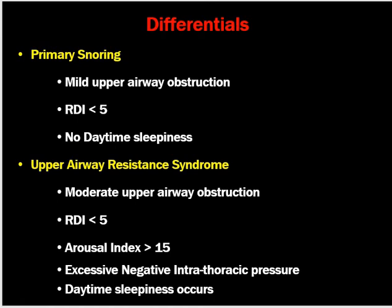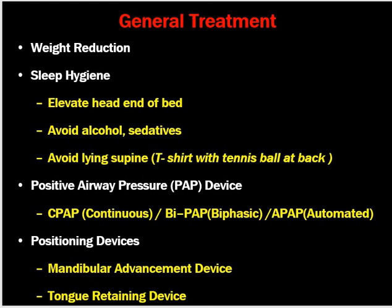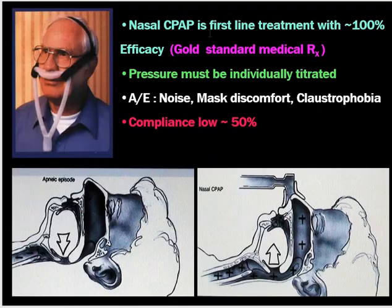General treatment aims for weight reduction, maintaining sleep hygiene by elevating the head of the bed at nighttime, avoiding alcohol and sedatives at nighttime, and avoiding the supine position. A tennis ball can be kept in the back of the T-shirt so the patient cannot sleep supine. Positive airway pressure devices are important — continuous positive airway pressure (CPAP), biphasic, or automated. Oral positioning devices include mandibular advancement devices and tongue-retaining devices.